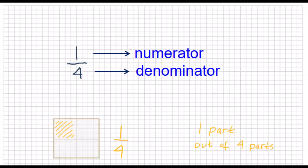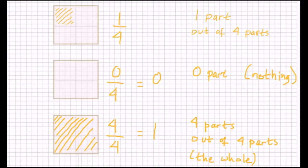We can visualize a fraction as a kind of division. For example, here we have a fraction of 1 over 4. The number 4 indicates that we are dividing one whole into four equal parts, and the number 1 represents that the fraction is one part out of the total of four parts. So 0 over 4 is just equal to zero.